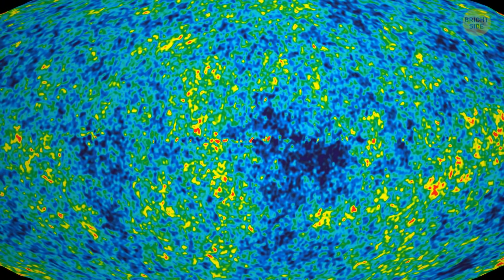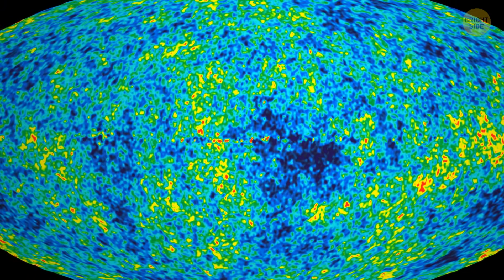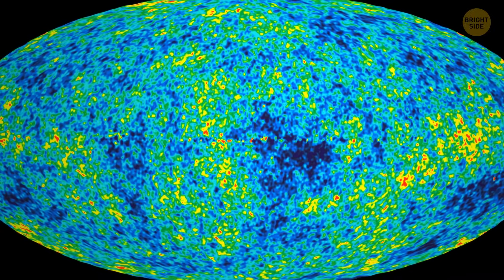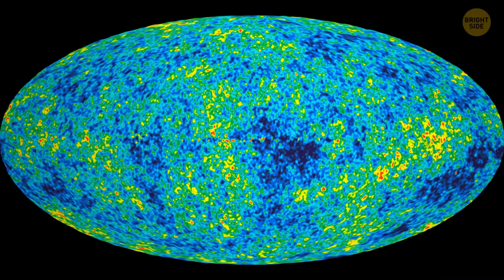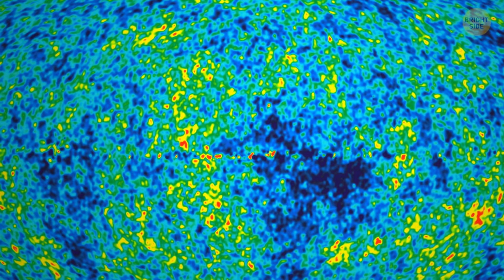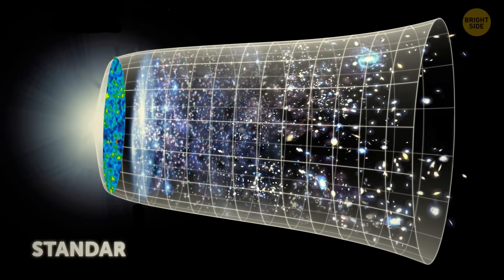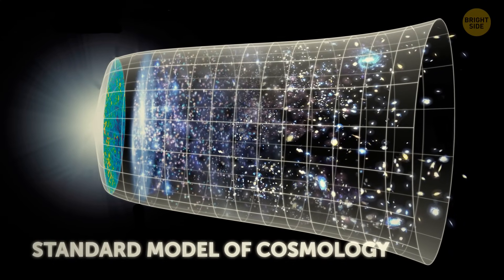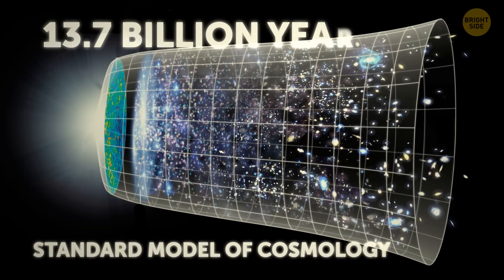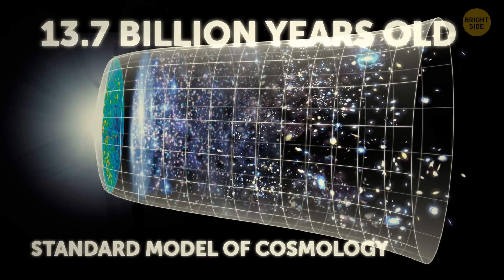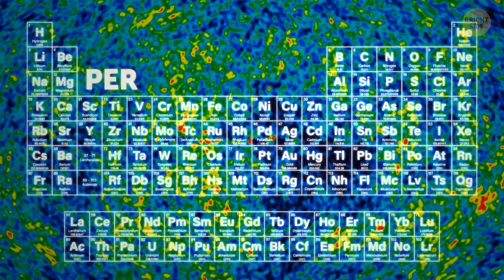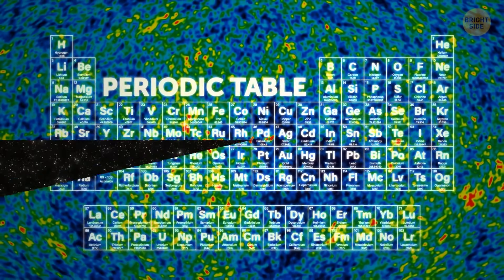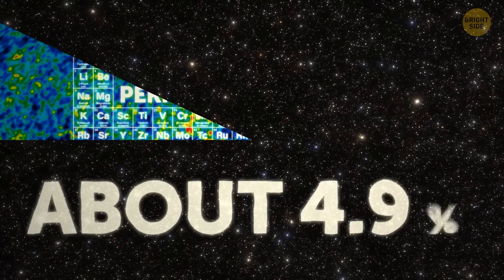This image turned out to be a cosmic treasure trove. It helped answer some of the universe's biggest questions, but also revealed a few new mysteries. This groundbreaking data confirmed the standard model of cosmology and told us that our universe is around 13.7 billion years old. Plus, it showed us that the elements in our regular periodic table make up only a tiny fraction of the universe's recipe.